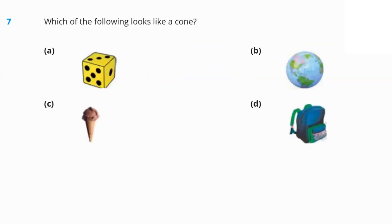Next question, which of the following looks like a bone? Very easy. The ice cream cone. Option C is the answer.